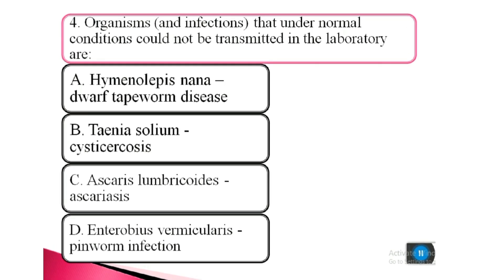Question 4. Organisms and infections that under normal conditions could not be transmitted in the laboratory are: a. Hymenolepis nana, dwarf tapeworm disease, b. Taenia solium cysticercosis, c. Ascaris lumbricoides, ascariasis, d. Enterobius vermicularis, pinworm infection.